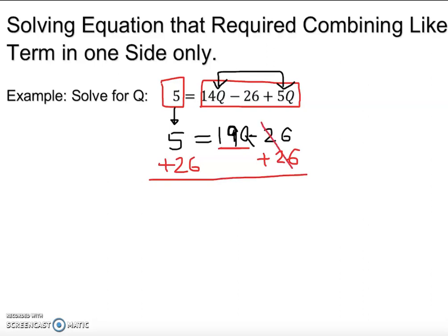And therefore this 26 is gone and we can clearly say 26 plus 5 which is 31 equal to 19Q. Beautiful.